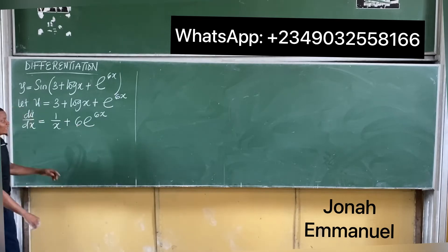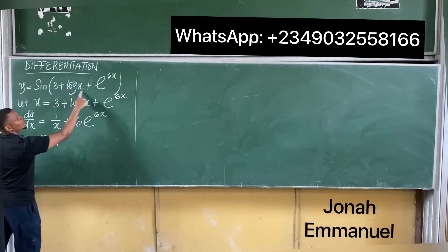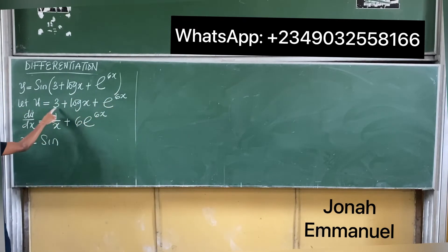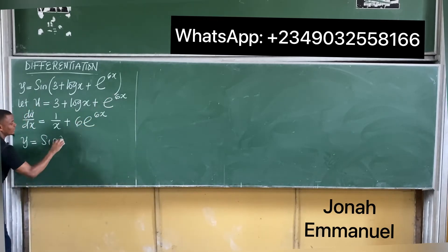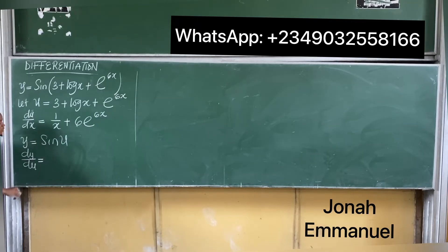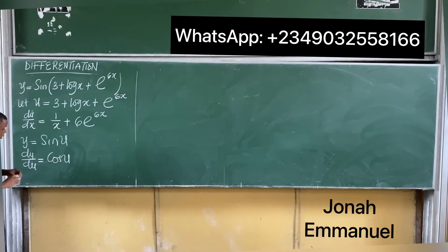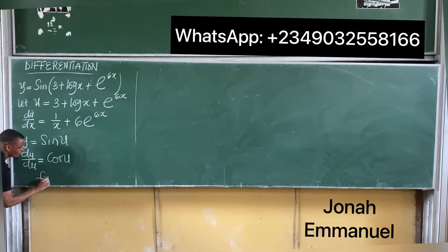Next, y is equal to sine of all of this, and since we called all of that u, we replace it: y = sin(u). Differentiate y with respect to u — dy/du equals cos(u).